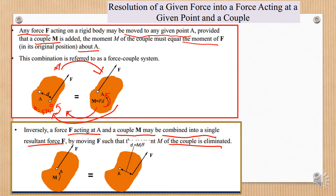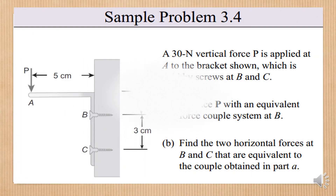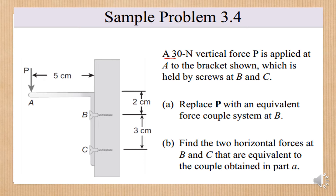So how can we do that? Let's learn it through a problem. A 30 newton vertical force P — so the force value is 30 newton — is applied to the bracket shown here, which is held by a screw at B and C. Replace P with an equivalent force-couple system at B, meaning we want to move P to B with the equivalent force-couple system.